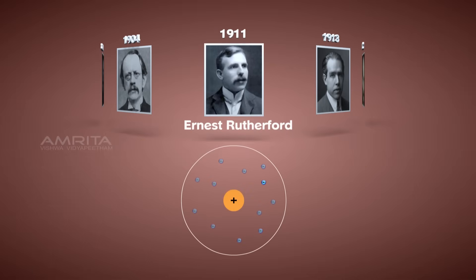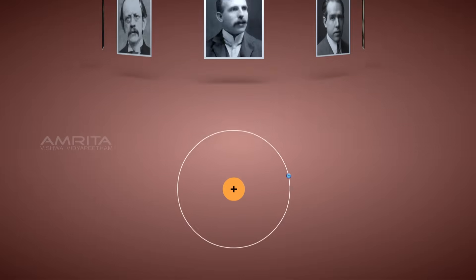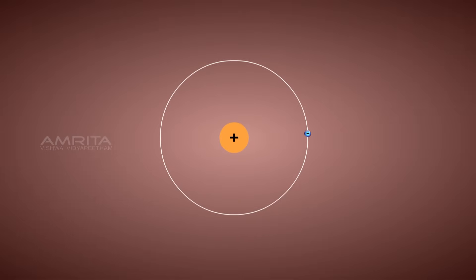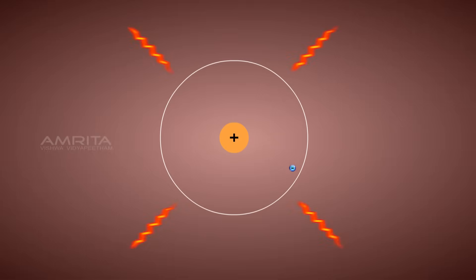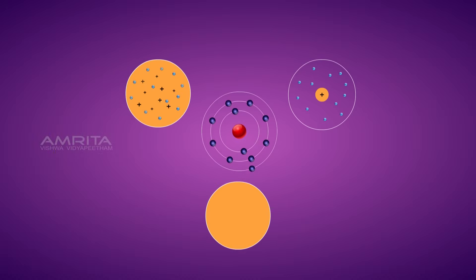Rutherford suggested that electrons revolve around the nucleus in well-defined orbits, but there was a problem with this. The motion of electrons in Rutherford's model was unstable because any charged particle moving in a circular path emits electromagnetic radiation, thus the electrons would lose energy and fall into the nucleus, making the atom highly unstable.